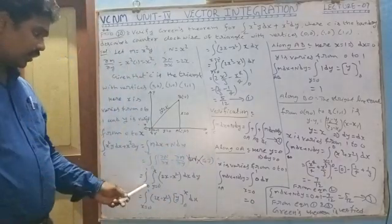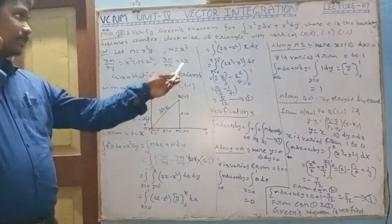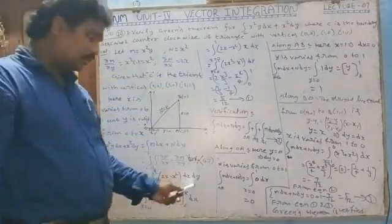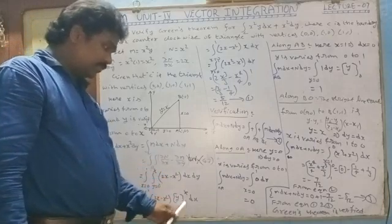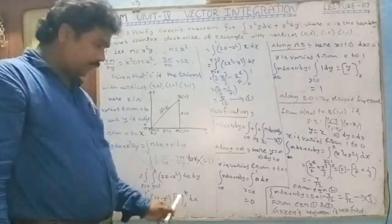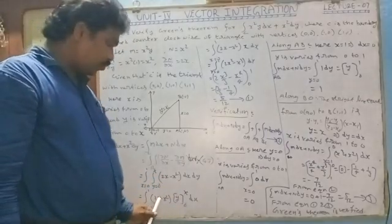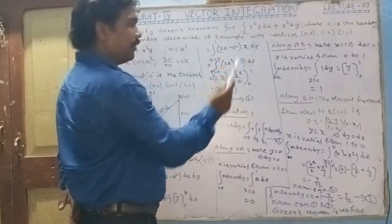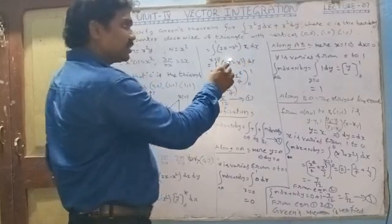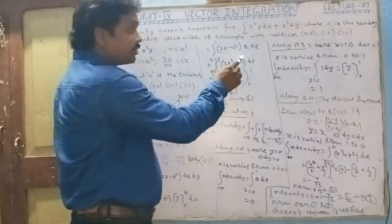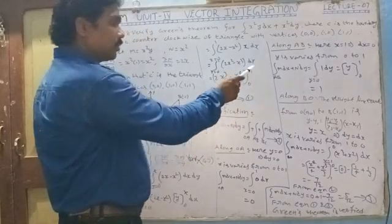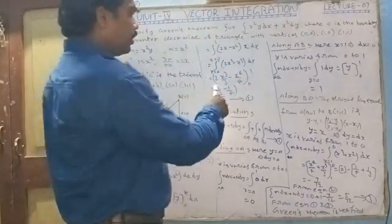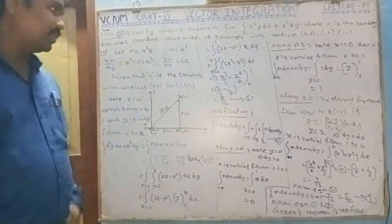By Green's theorem, the integral over C of M dx plus N dy equals the double integral of (∂N/∂x minus ∂M/∂y) dx dy, with x from 0 to 1 and y from 0 to x. This gives the integral of (2x minus x squared) dx dy. Integrating with respect to y first, applying limits 0 to x: (2x minus x squared)·x. Then integrating 2x squared minus x cubed with respect to x: 2x cubed by 3 minus x to the power 4 by 4, limits 0 to 1, gives 2 by 3 minus 1 by 4 equals 5 by 12. This is equation 1.